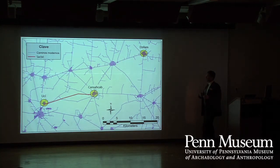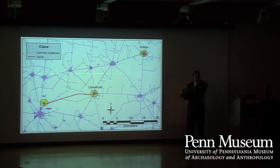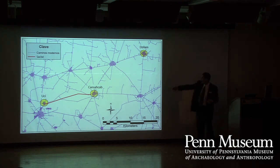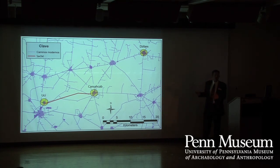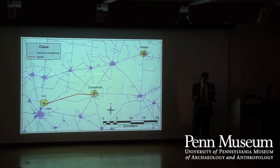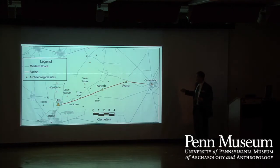In terms of what these causeways were for, we're not entirely sure. In the 1970s, Will Andrews and Ed Kurjack proposed that these were boundary markers — that Eki, which would have been the center of a polity including Khansakab, built this causeway to Khansakab at the edge of its polity in the face of Zilang, another large megalithic center in the Early Classic, suggesting competition between Eki and Zilang. One of the reasons we don't know much about this is because there hasn't been much survey or research of the sites along the causeway.